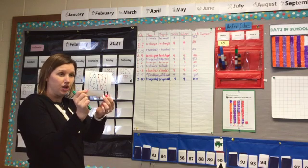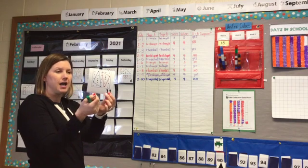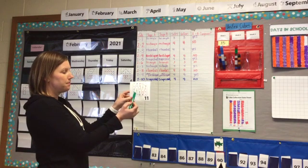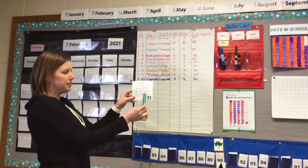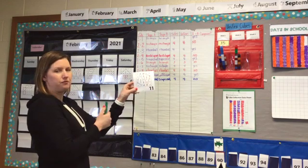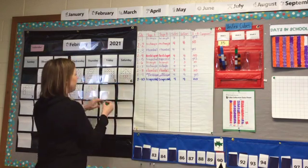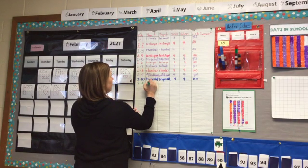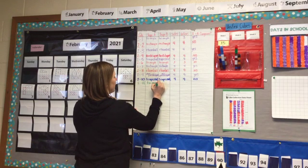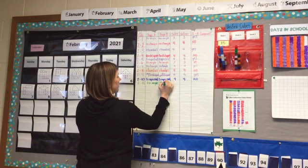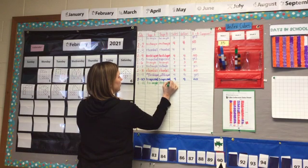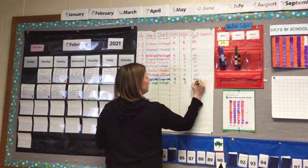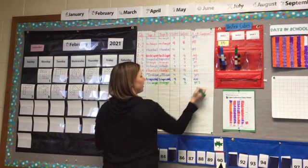They are the same shape, and now we have to decide: are they the same size? We can see that they are the same size — this one's just flipped. So for February 11, 2-11, we have a triangle for shape A and a triangle for shape B. We counted 3 sides, 3 vertices, and yes, they were congruent.